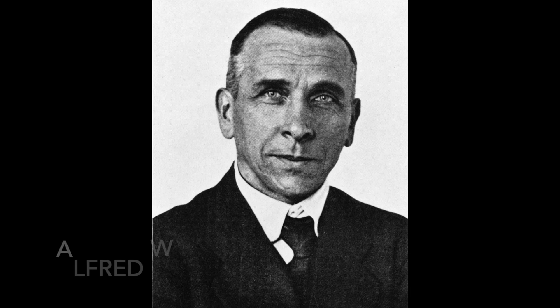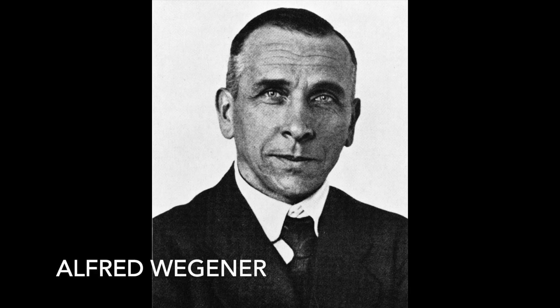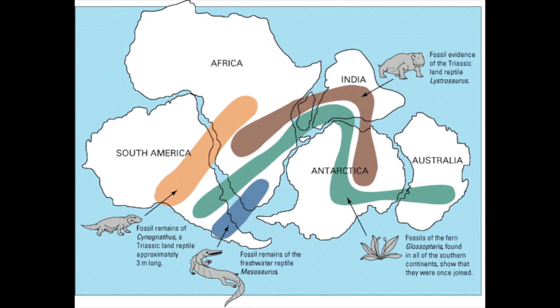Alfred Wegener, the father of plate tectonics. The evidence for continental drift in the early 20th century included the matching of continental shapes on either side of the Atlantic, and the geologic and fossil matchups between continents that are now thousands of kilometers apart.